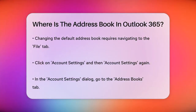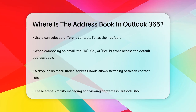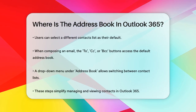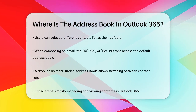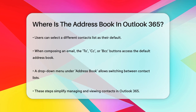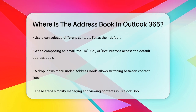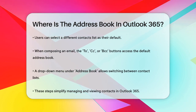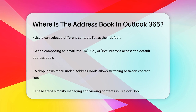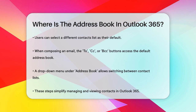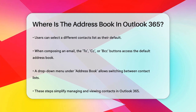Additionally, if you're composing a new email and need to find a contact, clicking on the To, CC, or BCC buttons will display your default address book. You can then use the drop-down menu under Address Book to switch between different contact lists.